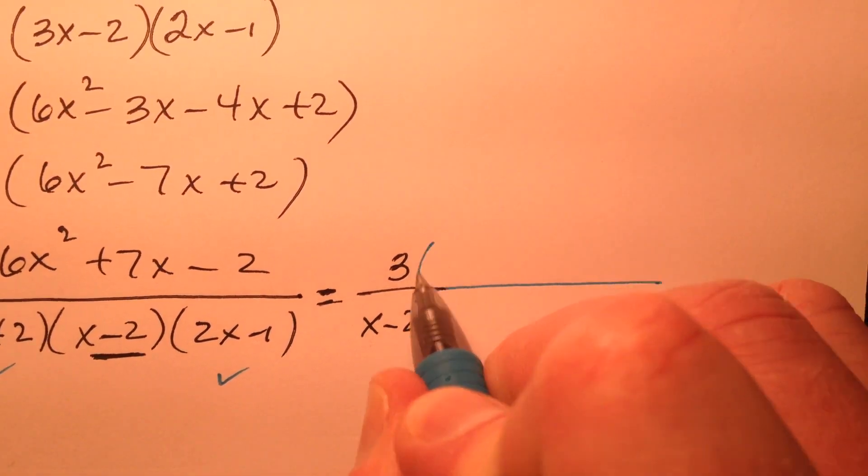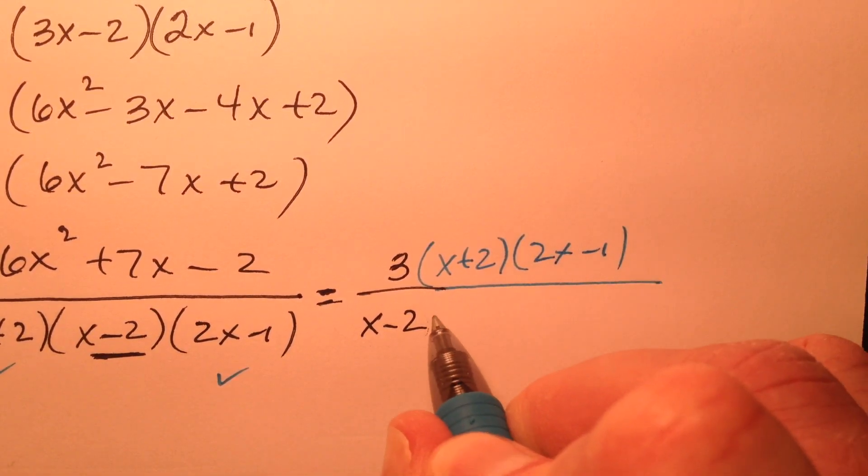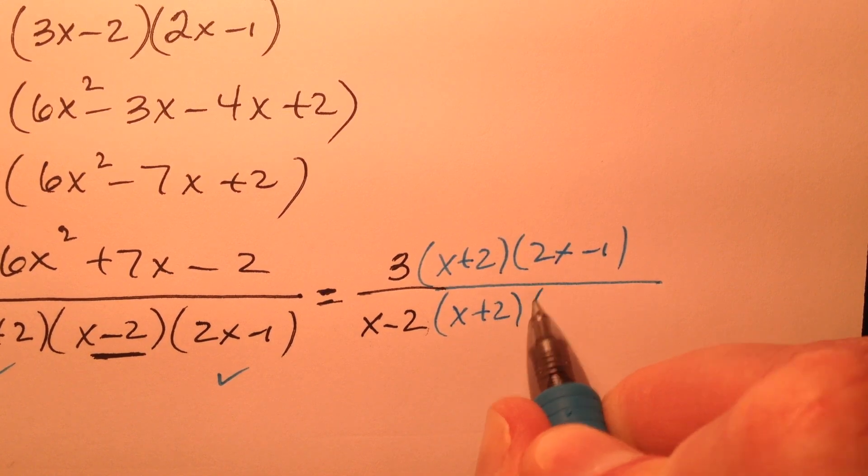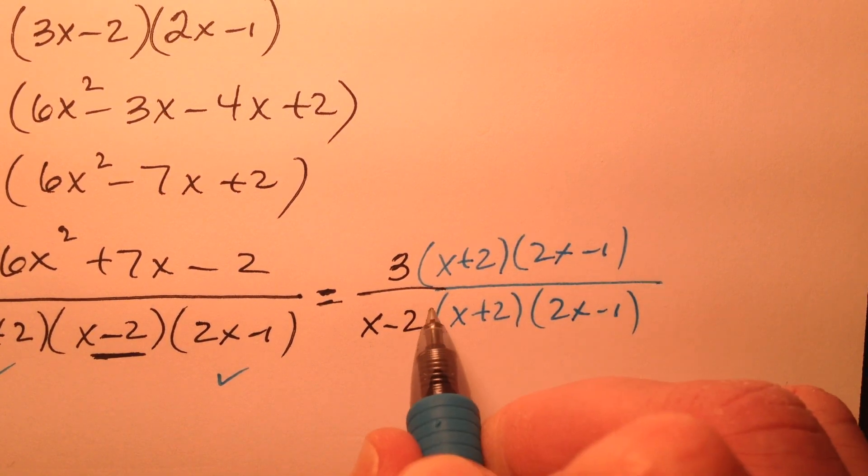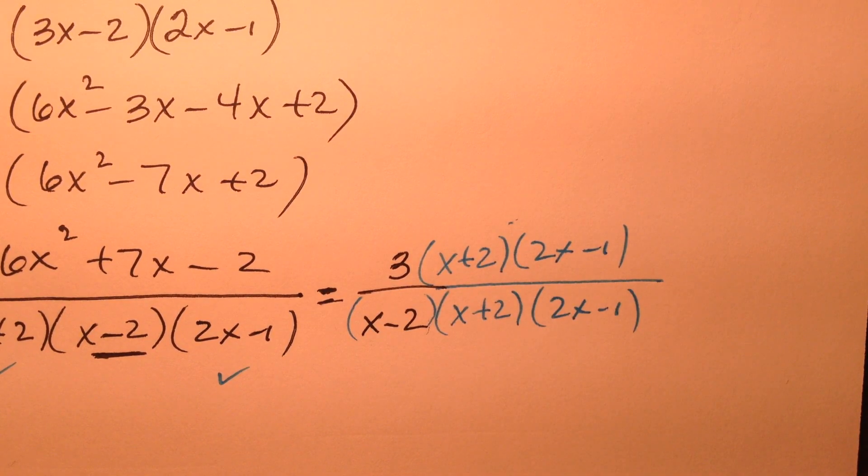And I'm going to put the x plus 2 and the 2x minus 1 in both places. Because I know ultimately, they canceled out.